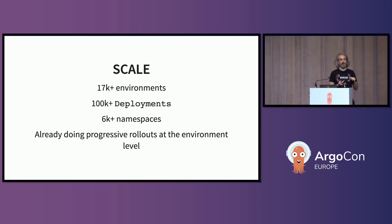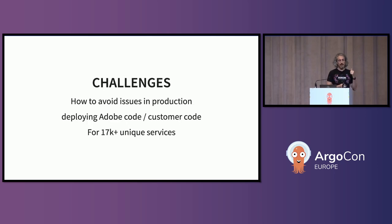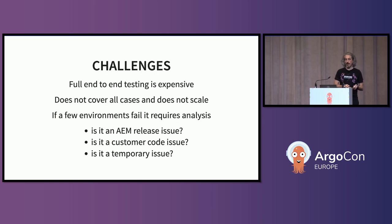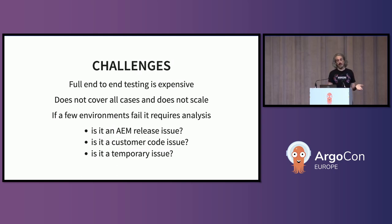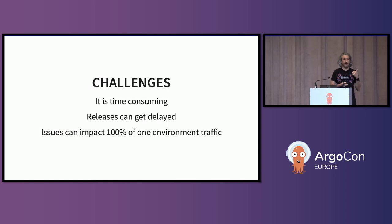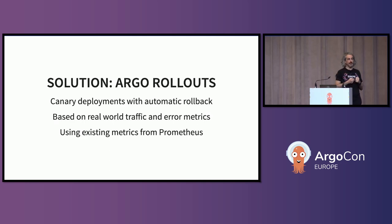We were already doing progressive rollouts at the environment level, but not at the deployment level. The challenges we're trying to solve with Argo Rollouts is how to avoid issues in production when we deploy Adobe code, or when a customer is deploying their own code, for 17,000 unique services. The previous approach was full end-to-end testing, which is very expensive, doesn't cover all cases, doesn't scale well, and when things fail, it requires a lot of analysis — is it a problem in our release, the customer's code, or just a temporary issue? This is very time-consuming, can delay releases, and can impact 100% of customer traffic if something goes wrong.